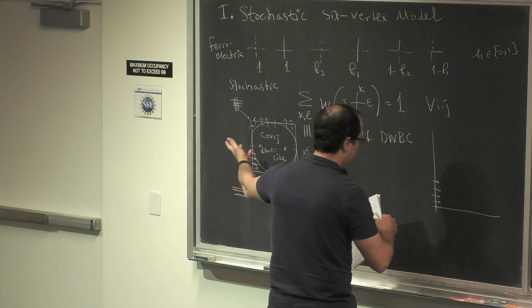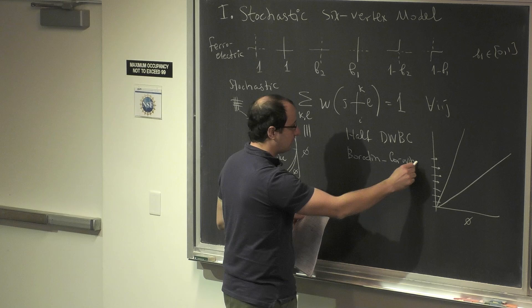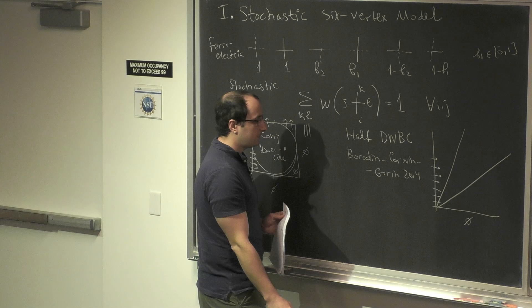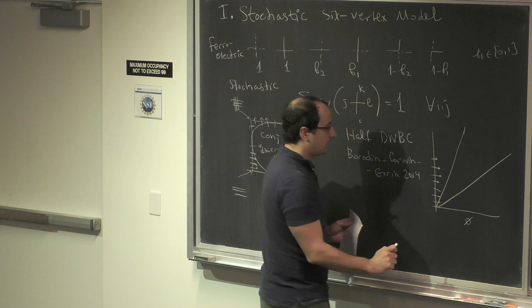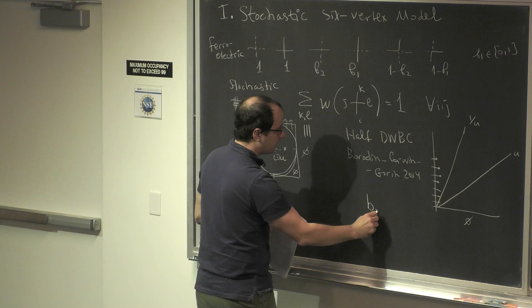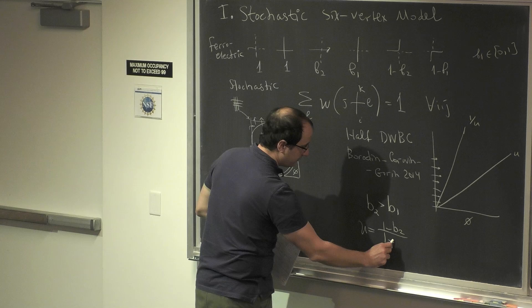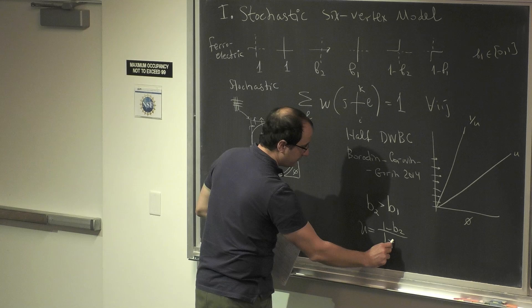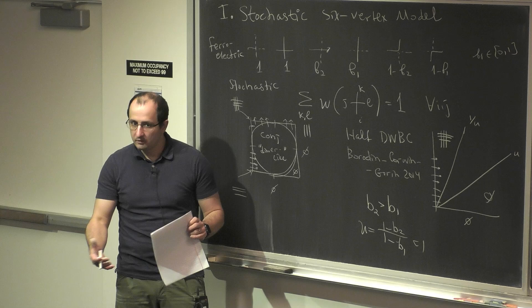Conjecturally there is conformal invariance and Gaussian free field in the full domain wall. But in the half domain wall boundary condition — and it's proven, because it's an easier problem — it was proven by Borodin, Corwin, and Corwin that the paths fill a cone of slope u and 1/u, where u is a parameter depending on b's. With b2 greater than b1, so you want to go right more than up, u equals (1 minus b2)/(1 minus b1) less than 1. You get two frozen phases and in between the cone, between slopes u and 1/u, you get a random mixture of paths.